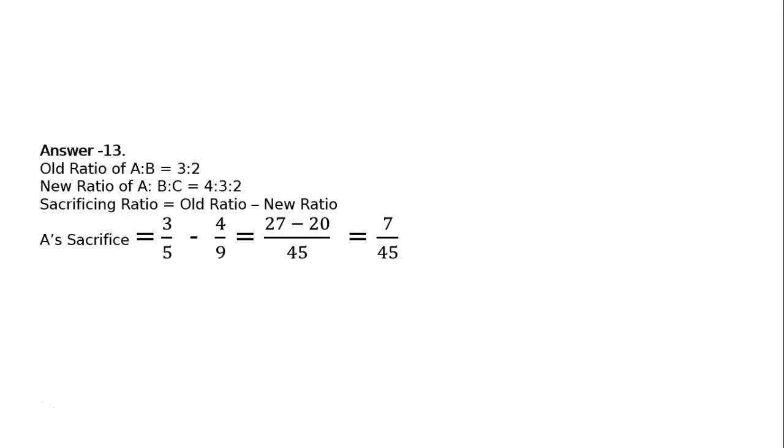B's sacrifice. Old share is 2 upon 5. New share is 3 upon 9. That is equal to LCM 45. 9 threes are 18 minus 5 threes are 15. That is equal to 3 upon 45.